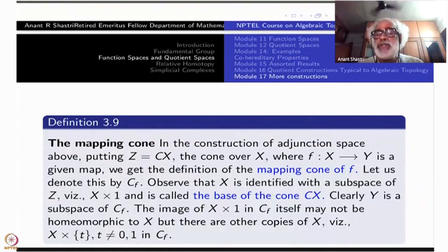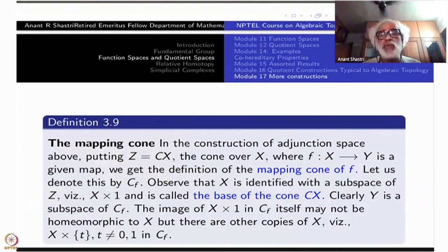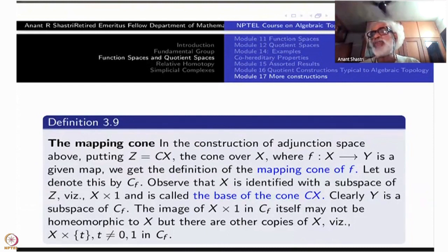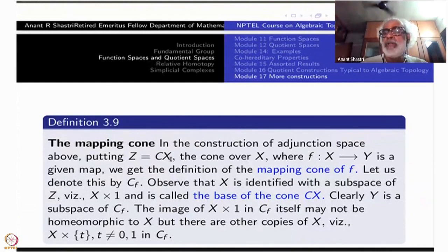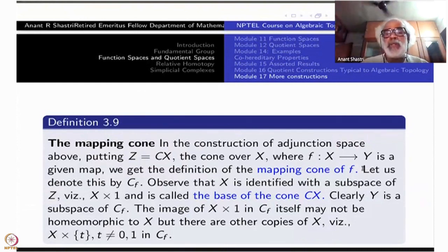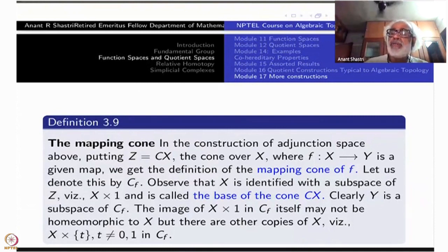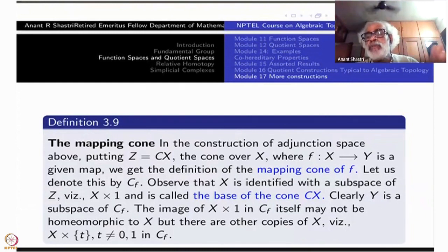Instead of X cross I, you take the cone — namely X cross {0} is collapsed to a single point. Then X itself is identified as X cross {1} as a subspace. So you can think of F as defined on a subspace of this cone CX, and then take the adjunction space. That is called the mapping cone of F, which is the quotient of the mapping cylinder in which the first end X cross {0} is also identified as a single point.